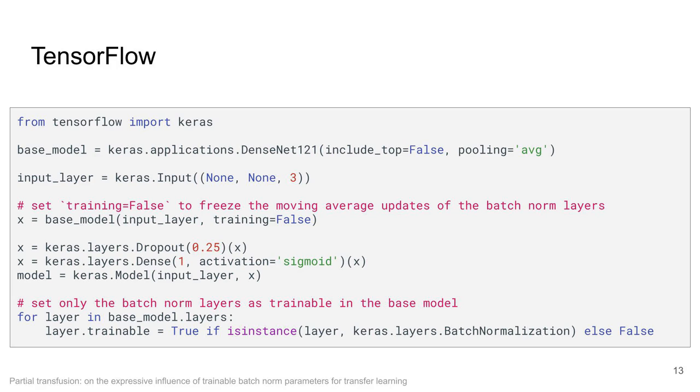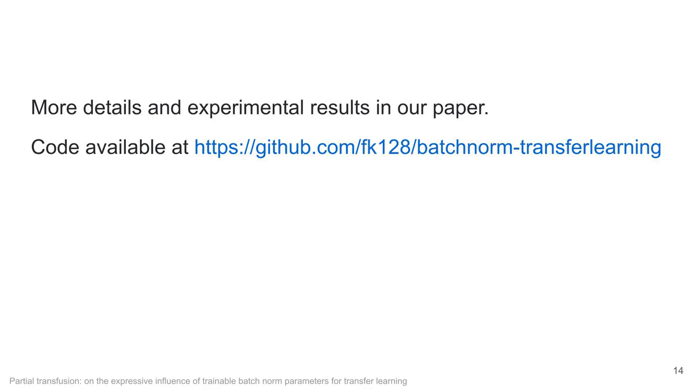Here we show an example of how to implement this in TensorFlow where the only modification is to set only the batch normalization layers to trainable and in inference mode. You can find more details and experimental results in our paper. You can also find the code on the following GitHub page. Thank you.